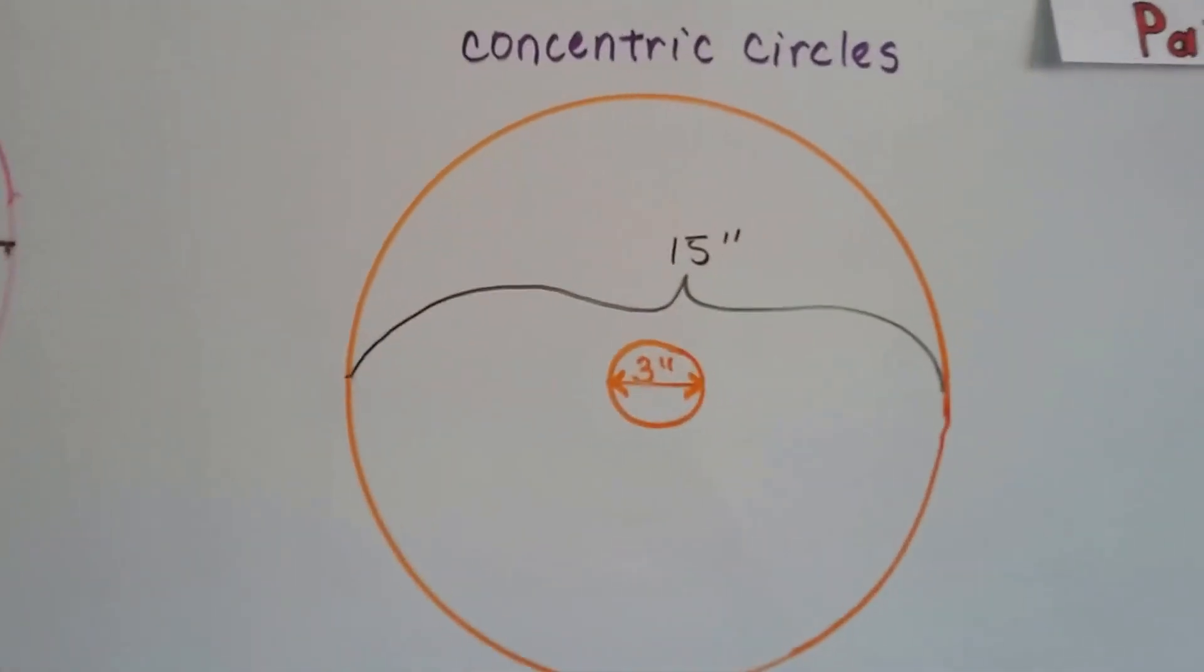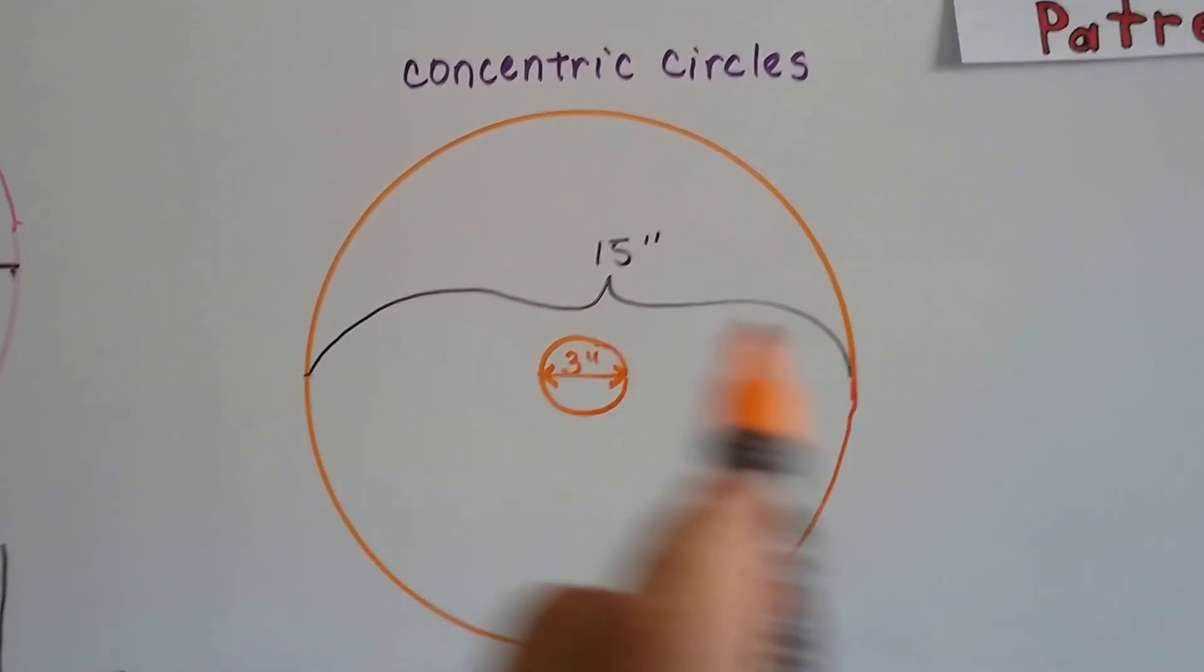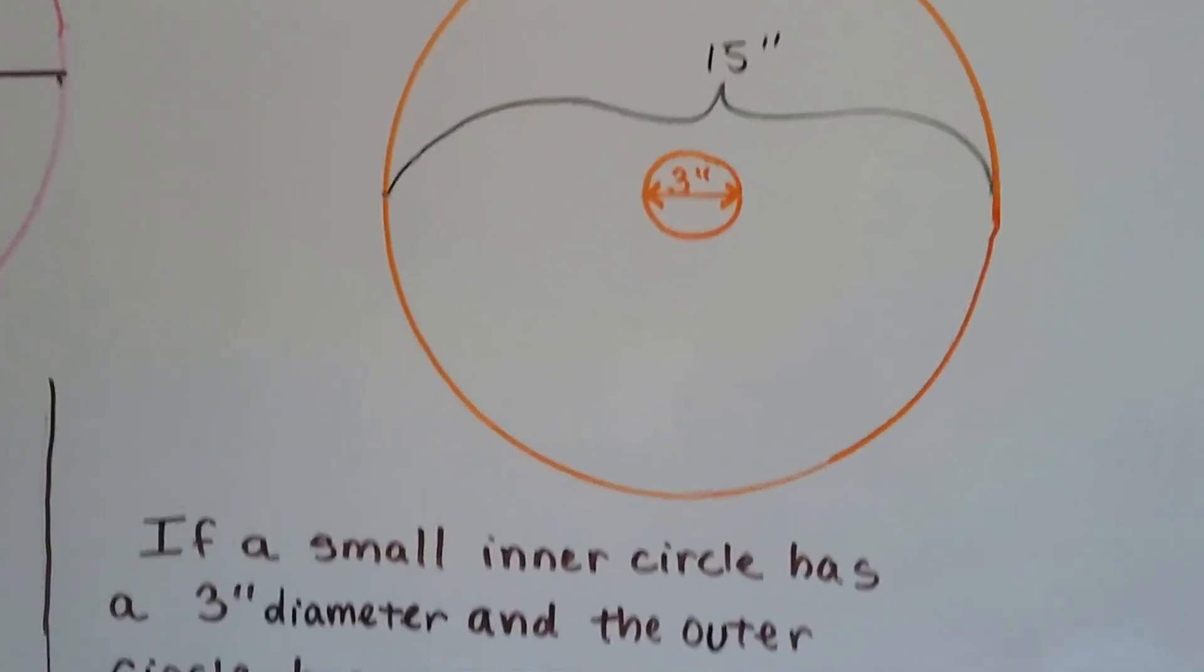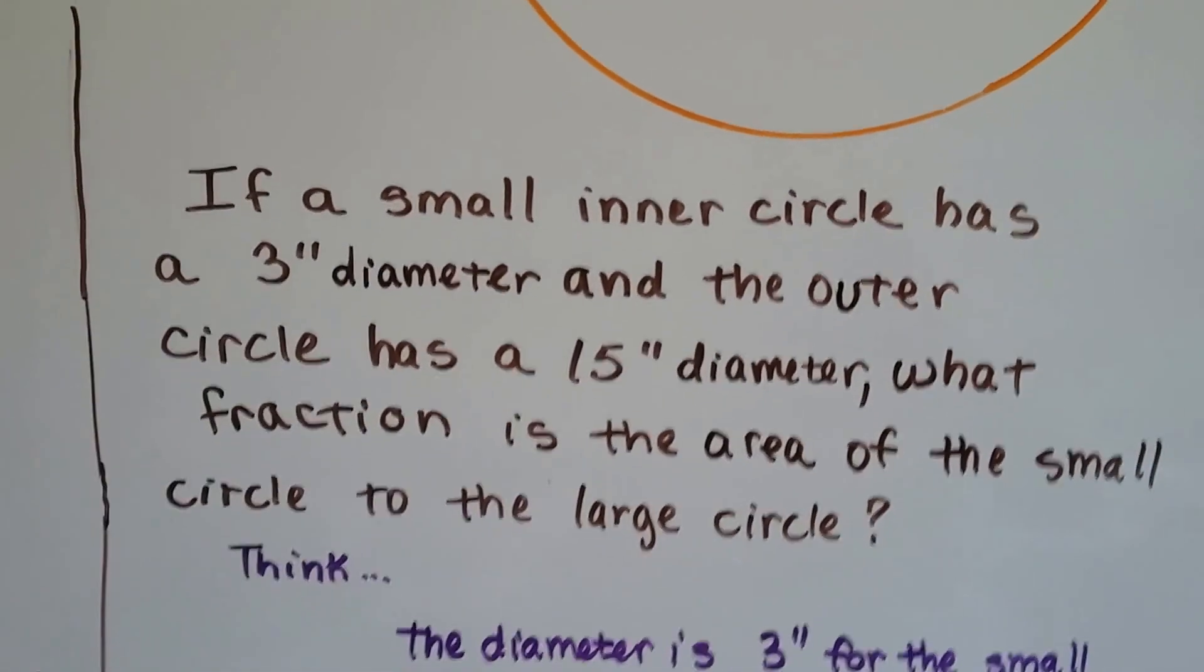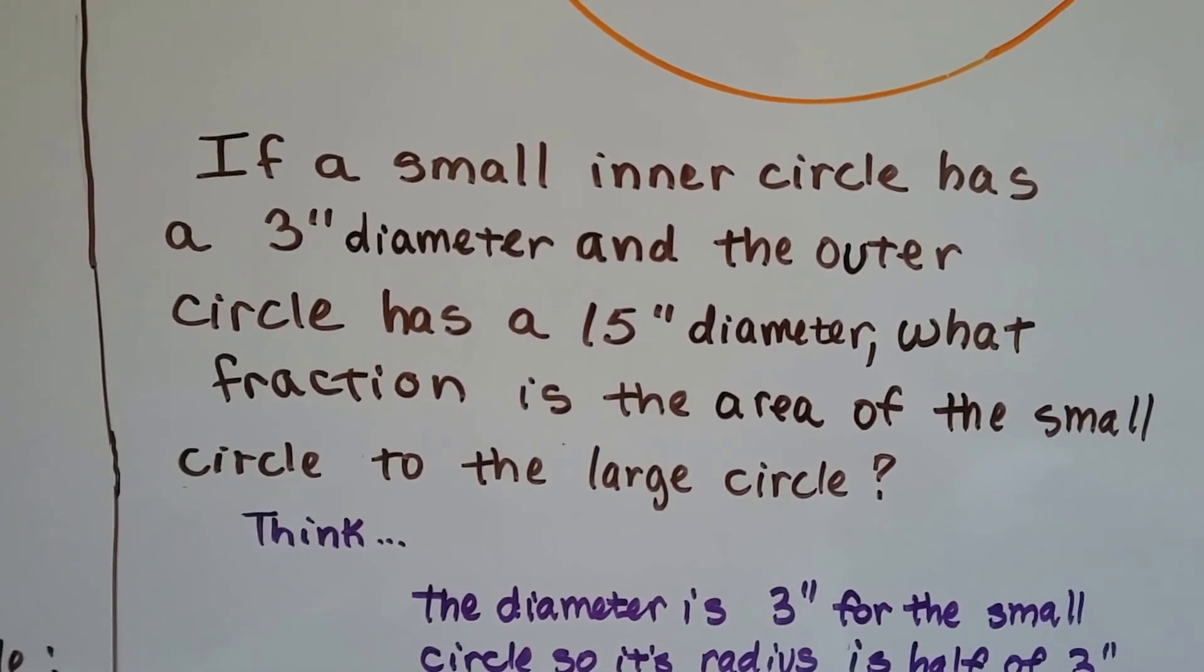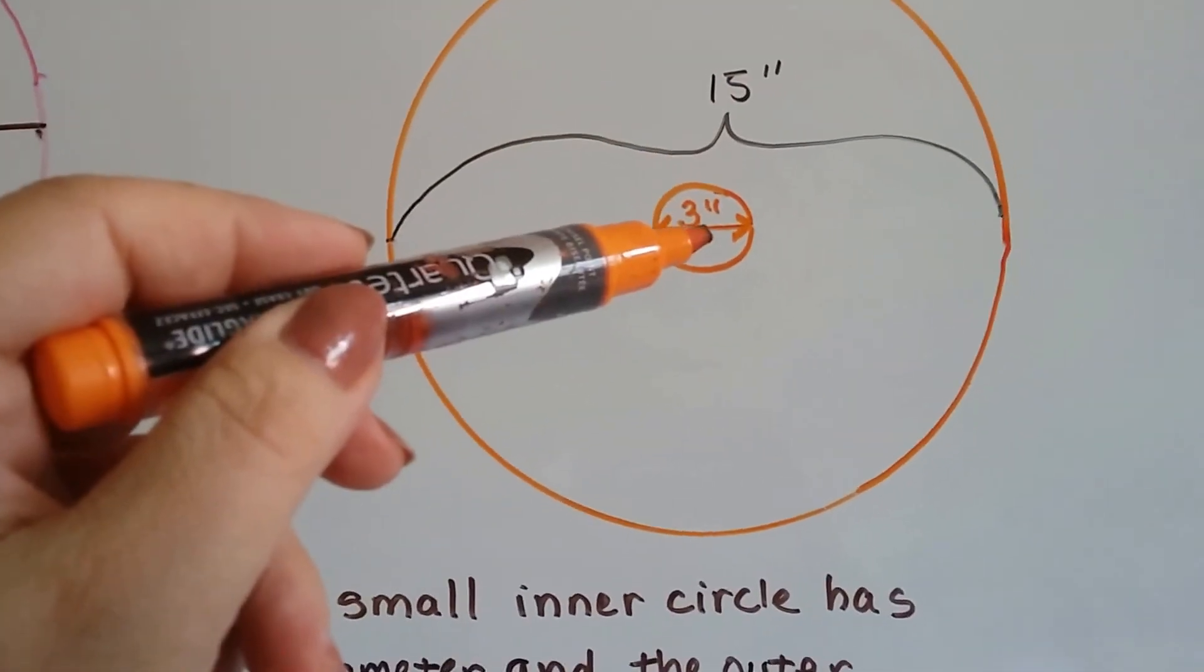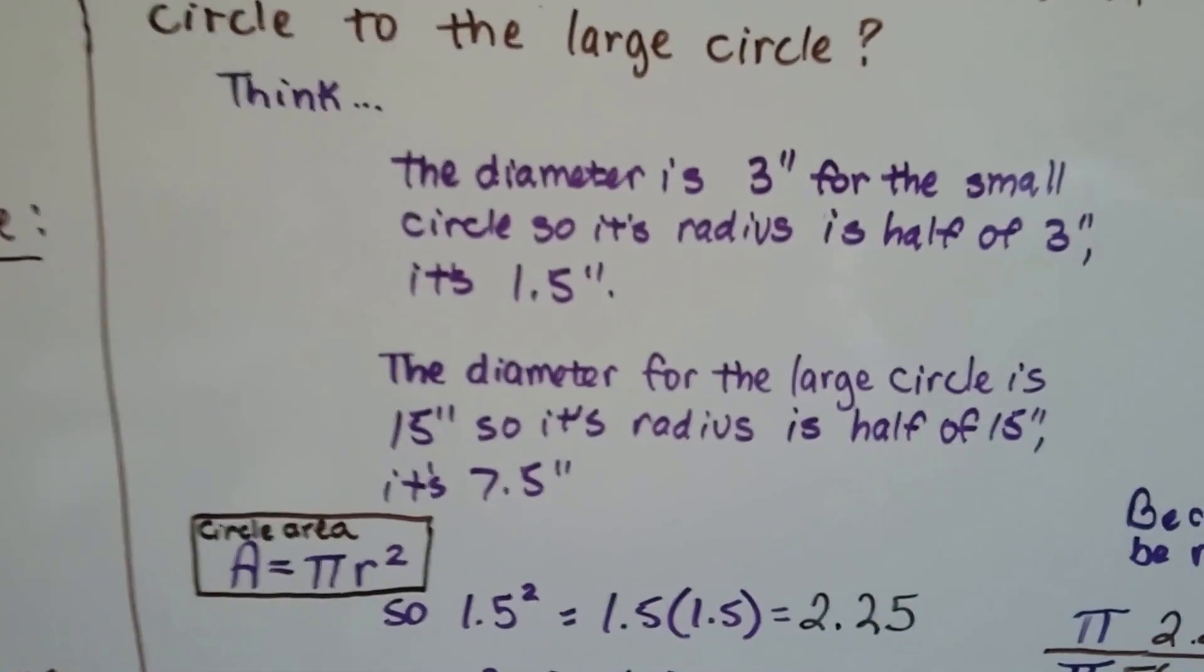Now let's take a look at these concentric circles. We've got a little 3-inch diameter circle inside of a 15-inch diameter larger circle. These are concentric. They share the same center point, and one is inside the other. If a small inner circle has a 3-inch diameter and the outer circle has a 15-inch diameter, what fraction is the area of the small circle to the large circle? Now you're going to think 3 times 5 is 15, so it's 1-5. But let's see what happens.